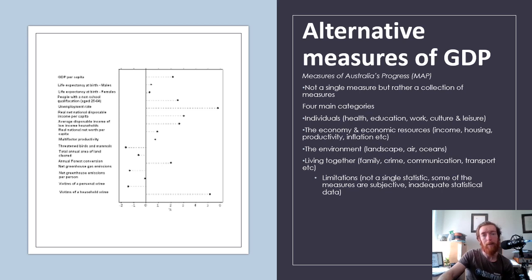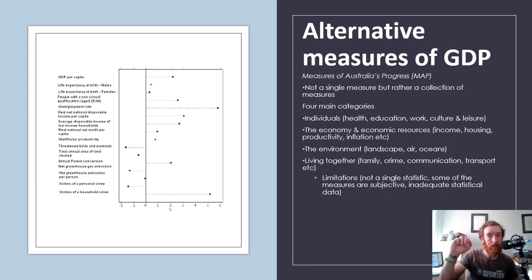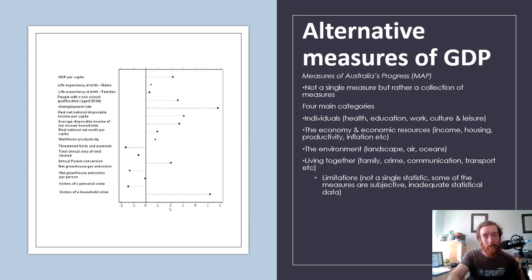The Measures of Australia's Progress (MAP) is not a single measure but a collection of measures across four categories: individuals (health, education, work, culture and leisure), economy and economic resources (income, housing, productivity, inflation), the environment, and living together (family, crime, communication, transport). Limitations include that it's not a single statistic, some measures are subjective, and there's inadequate statistical data. As shown on screen, everything is measured against a baseline and you can see how areas are moving forward or back over time.